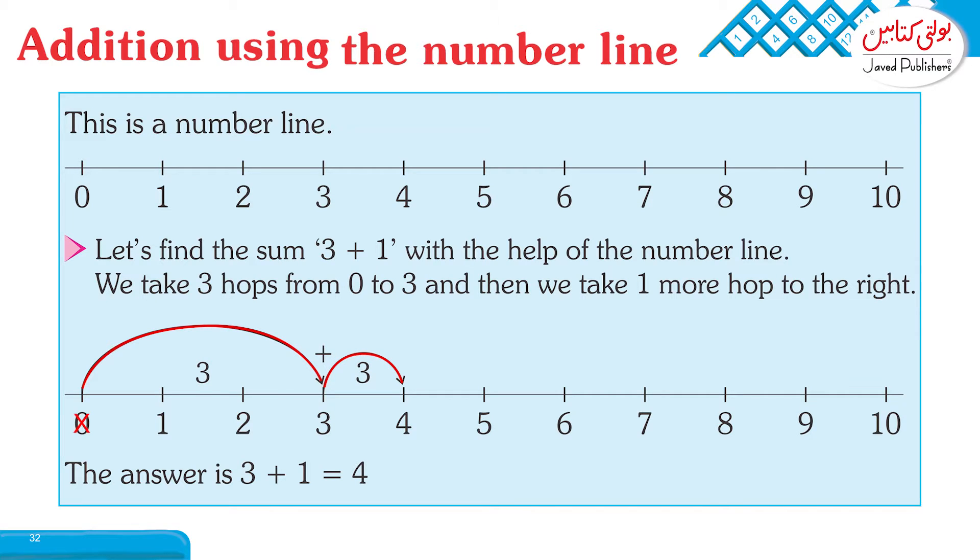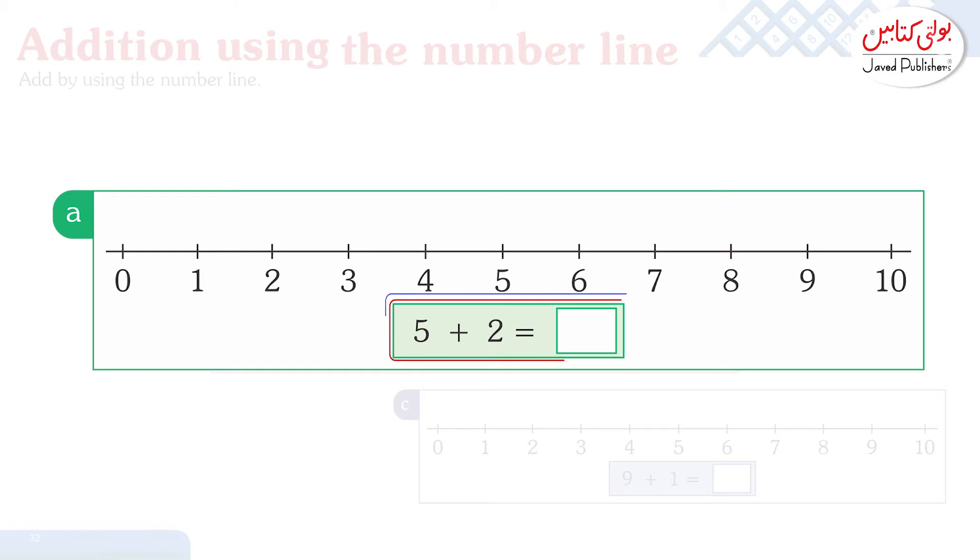We have to find 5 plus 2 on the number line. We will start from 0 and move 5 hops to reach number 5. Then from 5 onwards, we move 2 more numbers, going from 5 to 7. This is the number line, and the answer is 7.